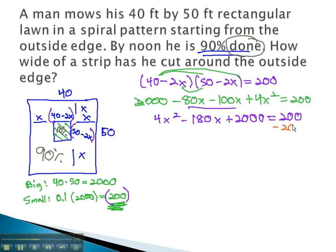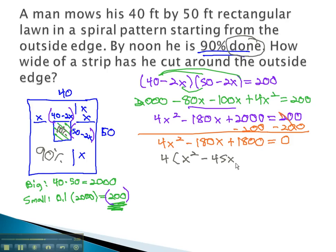Moving the 200 to the same side of the equation, so it equals 0, and we end up with 4x squared, minus 180x, plus 1800, equals 0. We can now start factoring this equation by first factoring out a 4, the greatest common factor, to get x squared, minus 45x, plus 450, equals 0.